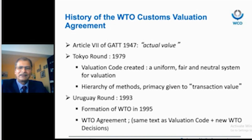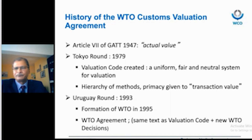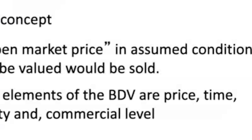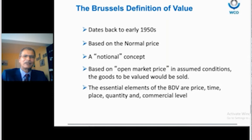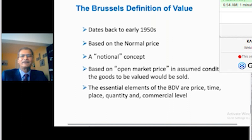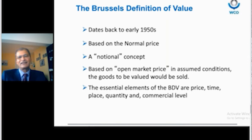We have the WTO Agreement, which is the same as the valuation code, and the new WTO decisions. Regarding the Brussels Definition of Value: it dates back to early 1950 and is based on the normal price — a notional concept based on open market price in assumed conditions in which the goods to be valued would be sold. The essential elements of the Brussels Definition of Value are price, time, place, quantity, and commercial level.